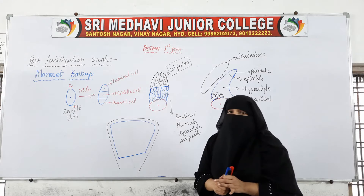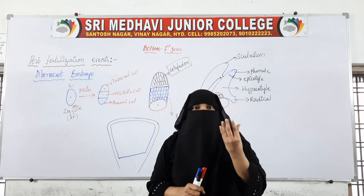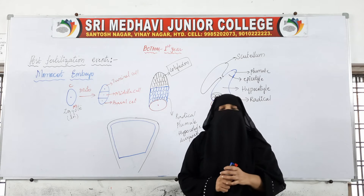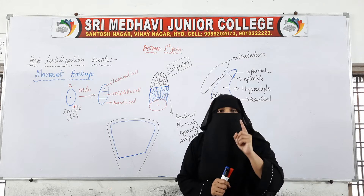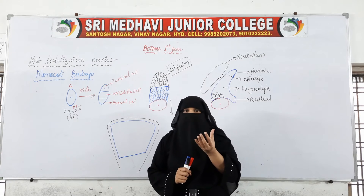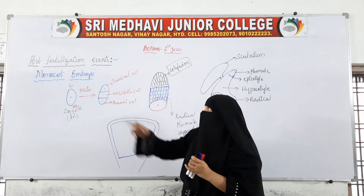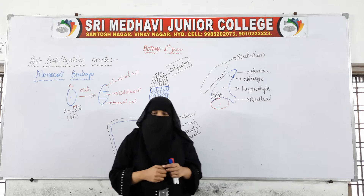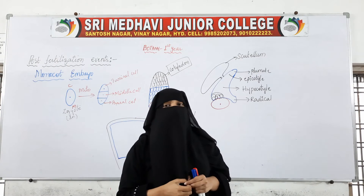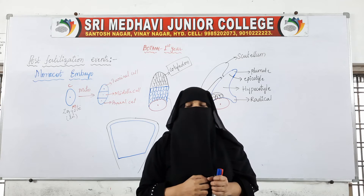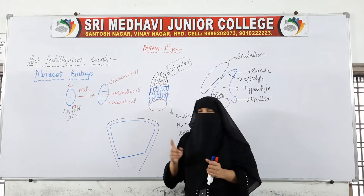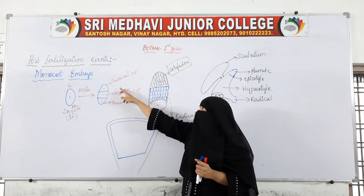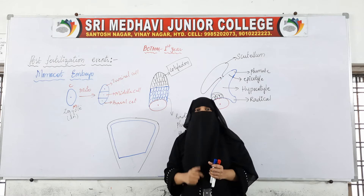In monocots, only one cotyledon will be formed. In dicot embryos, two cotyledons were formed — 'di' means two. In monocot, only one cotyledon is seen — 'mono' means one. This one cotyledon arises from the mass of cells produced by the repeated mitotic divisions of the terminal cell.